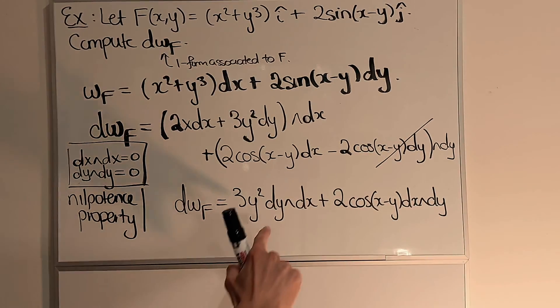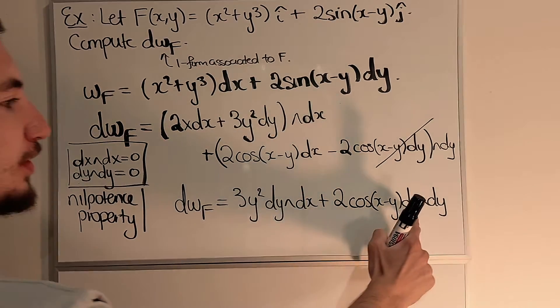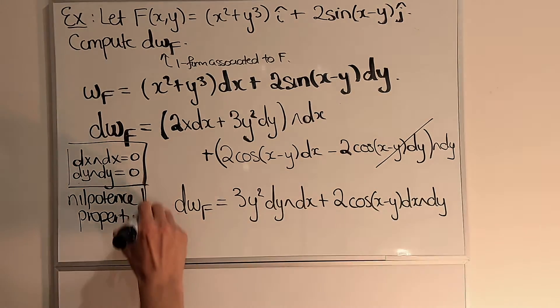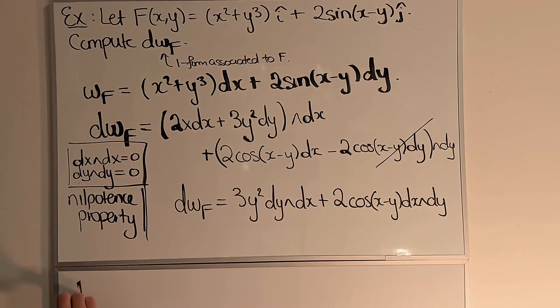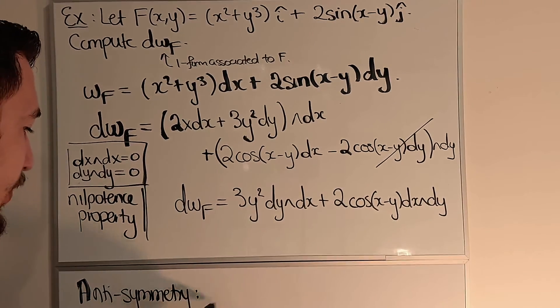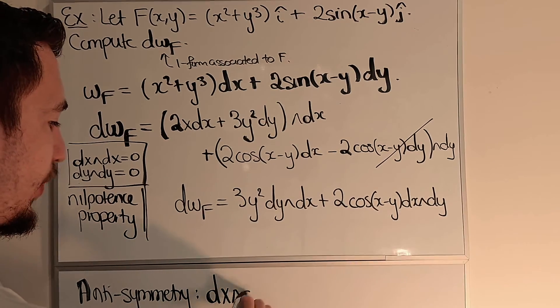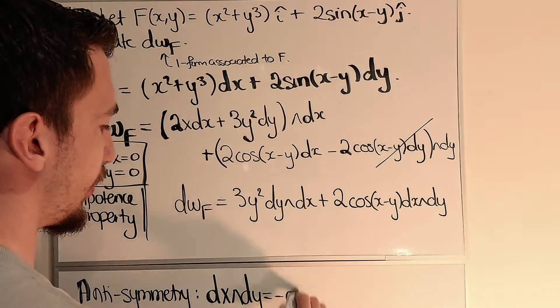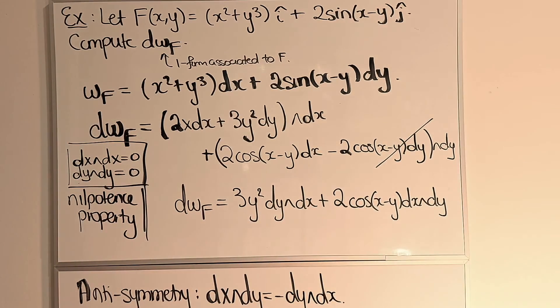But now to compare dy∧dx with dx∧dy, I'm going to use the anti-symmetry property. Namely dx∧dy = -dy∧dx.